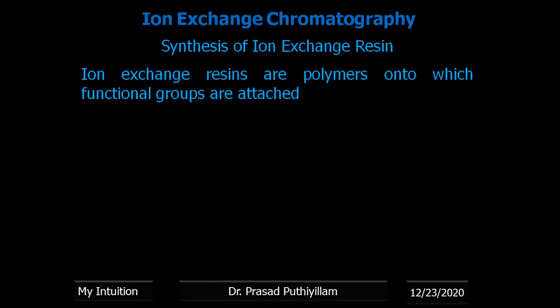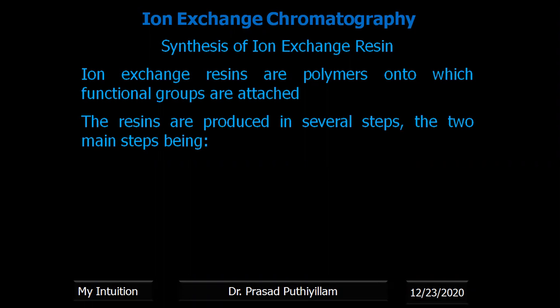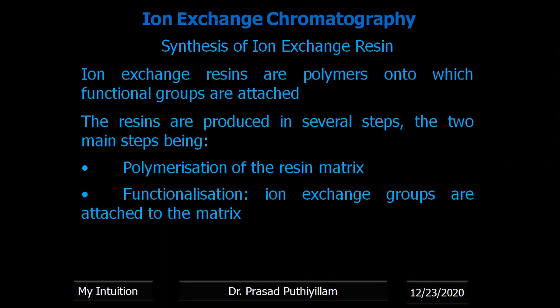Ion exchange resins are polymers to which functional groups are attached, and there are many different methods for their synthesis. The main two steps are: first, the preparation or polymerization of the resin matrix; and second, functionalization of that matrix as required — strongly acidic, strongly basic, weakly acidic, or weakly basic ion exchange resins.